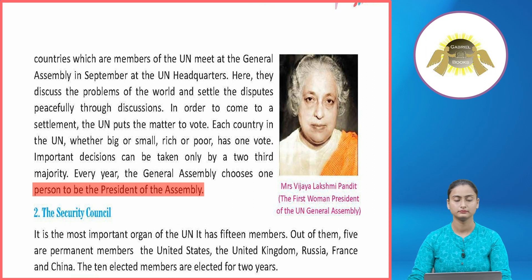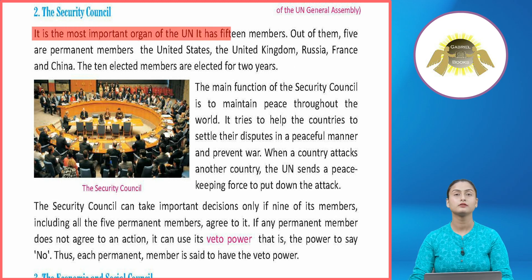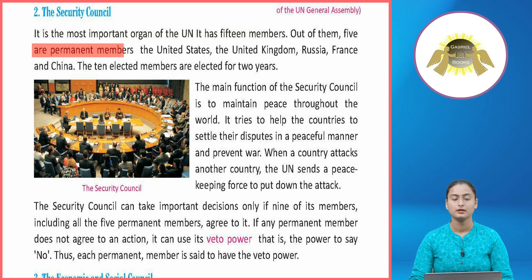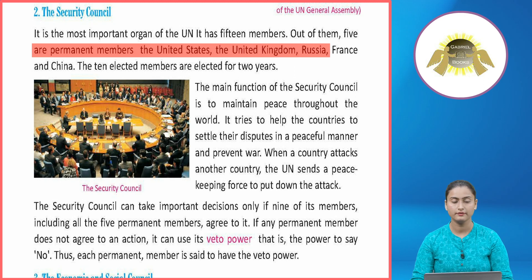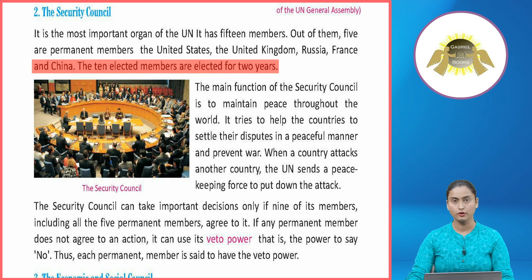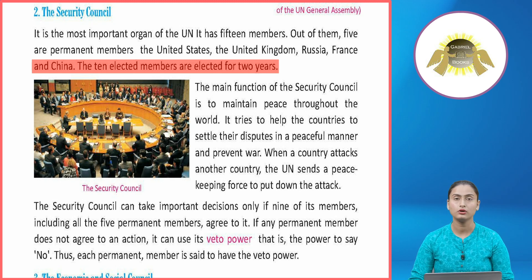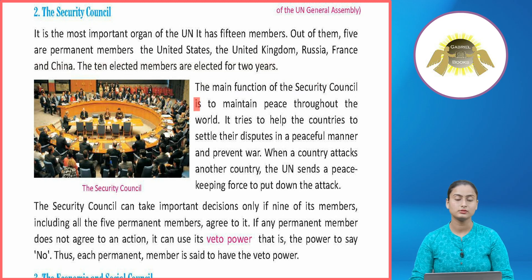The Security Council is the most important organ of the UN. It has 15 members, out of which five are permanent members: the United States, the United Kingdom, Russia, France, and China. The 10 elected members are elected for two years. Security Council ke total 15 members hote hain — 5 fixed hote hain: United Kingdom, United States, Russia, France aur China. Baaki ke 10 ko har 2 saal ke liye elect kiya jata hai.